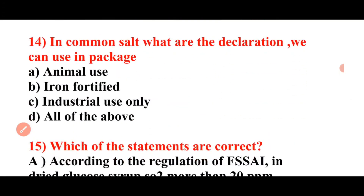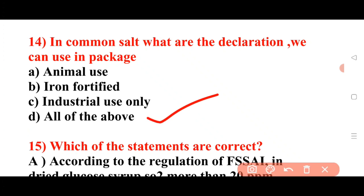Next question: In common salt, what declarations can be used in packaging? Options: animal use, iron fortified, industrial use only, all of the above. Answer: D is the correct answer — all of the above: animal use, iron fortified, and industrial use only.